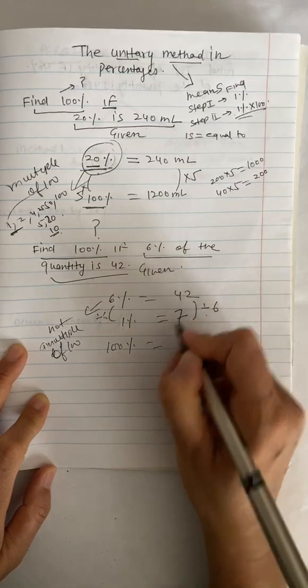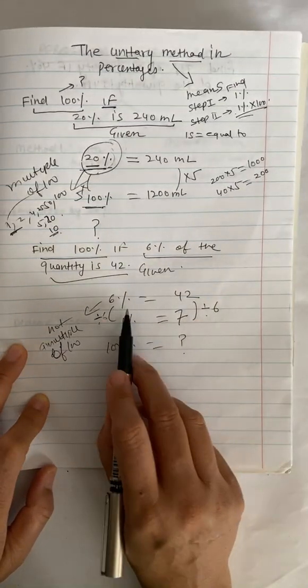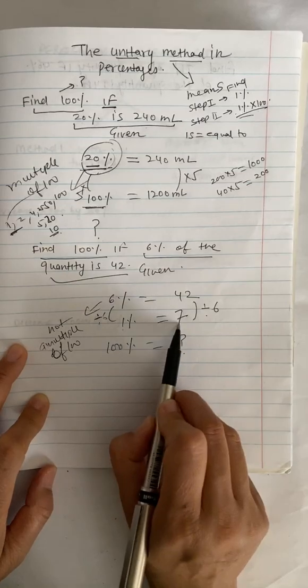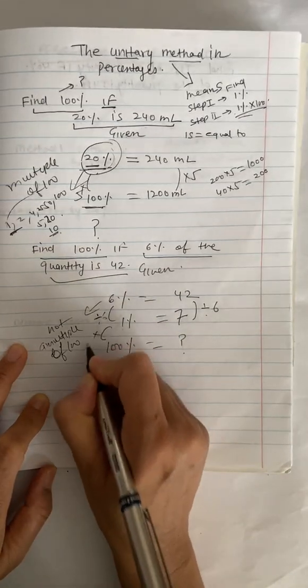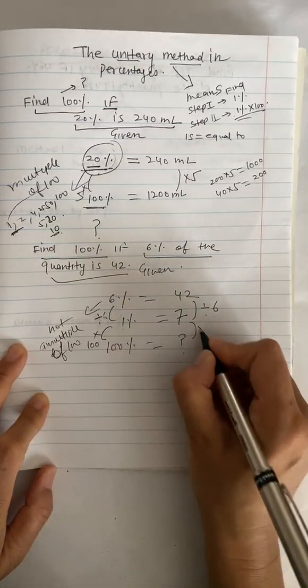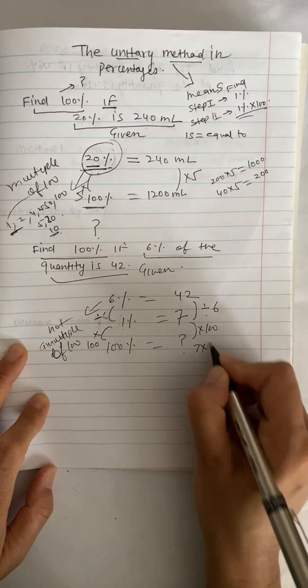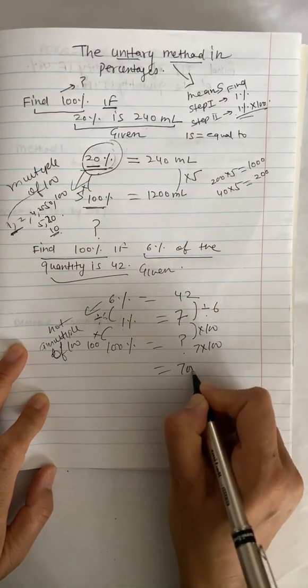To get 1% from 6%, I need to divide everything by 6. So this is 7. If 6% is 42, 1% is 7. Now, to find 100%, I simply need to multiply this by 100. I will get 7 times 100, which is equal to 700.